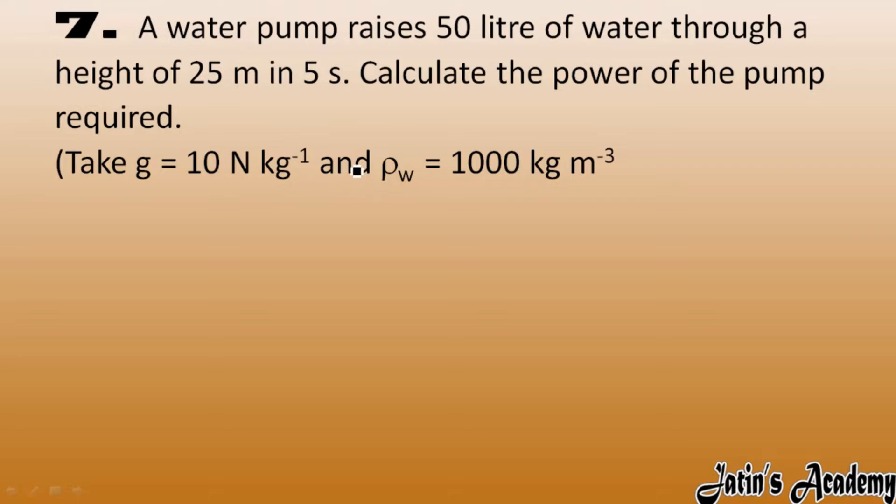So firstly we have to calculate the mass. What are the given quantities? Carefully see, volume of water we have 50 liters. In order to convert 50 liters into SI units, just divide it by 1000. So you will get the answer in meter cube. We got 5 by 100 meter cube as a volume.